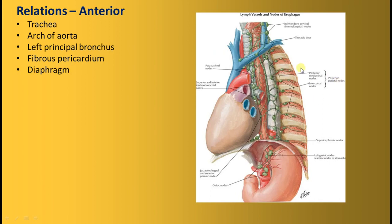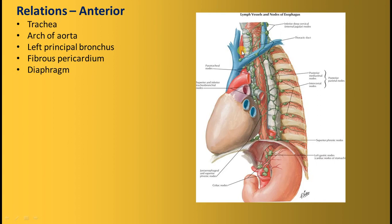Regarding relations of the esophagus in the thorax: anteriorly, in the superior mediastinum, it is related to the trachea, arch of aorta, and left principal bronchus, then the fibrous pericardium and posterior sloping surface of the diaphragm in the posterior mediastinum. In the neck, in front it is related to the trachea; in the tracheoesophageal groove lies the recurrent laryngeal nerve on both sides, and laterally the thyroid gland and common carotid artery.